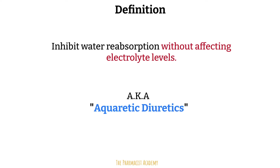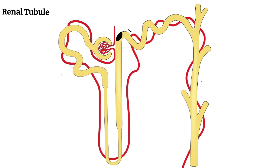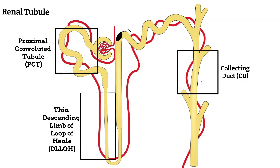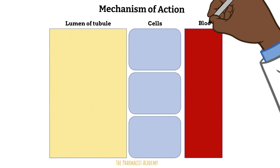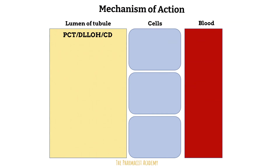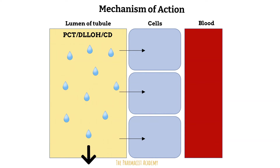The mechanism of action is very straightforward. First, just like all diuretics, you want to identify which part of the renal tubule they work at. The osmotic diuretics' mechanism of action takes place in the proximal convoluted tubule, the thin descending portion of the loop of Henle, and the collecting duct. These regions account for the highest percentage of water reabsorption compared to any other parts of the renal tubule, and they are also highly permeable to water, meaning water can simply pass through the membranes.